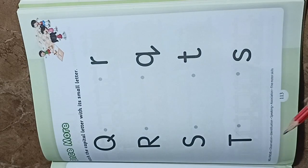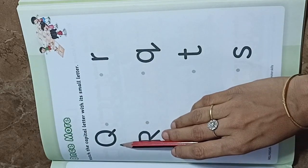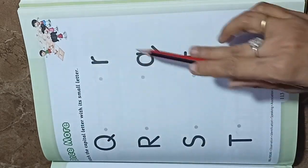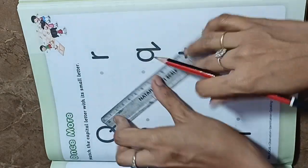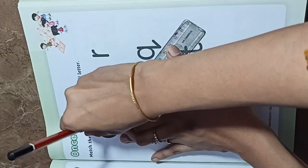So, let's start our skill. So, what is our capital Q? It is capital Q. We have a small q and small q. We will use our scale and we will make the same small letter.